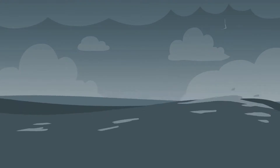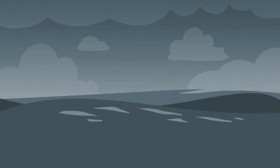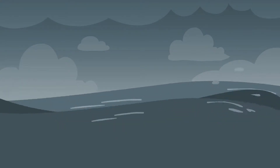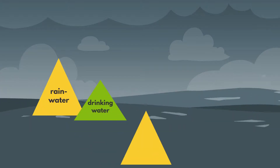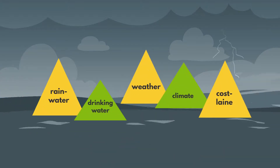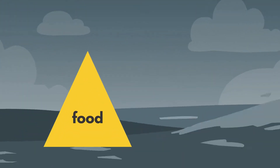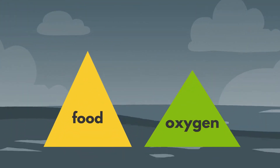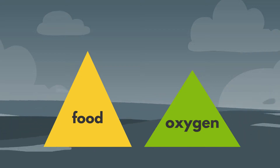The ocean drives global systems that make the earth habitable for humankind. Our rainwater, drinking water, weather, climate, coastlines, much of our food, and even the oxygen in the air we breathe, are all ultimately provided and regulated by the sea.